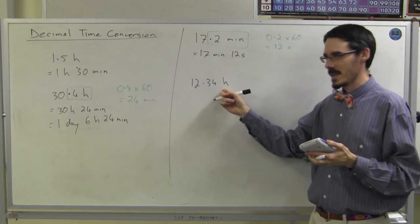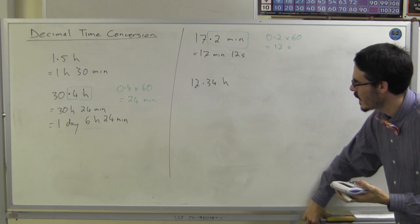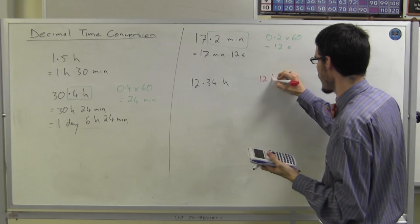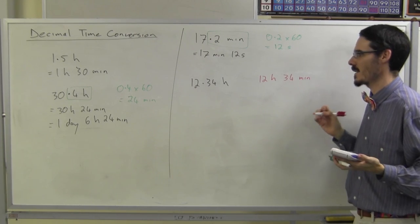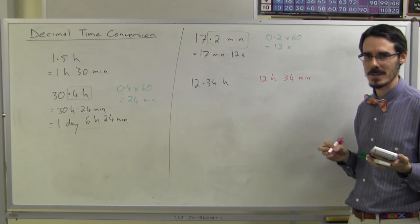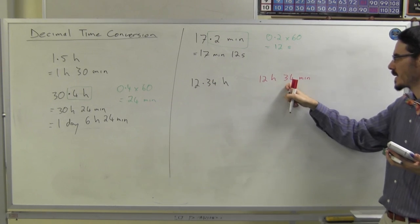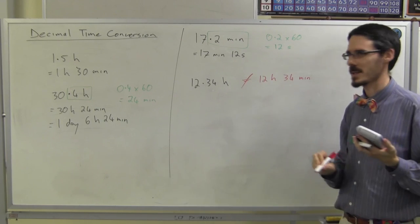This one is very tempting for my students to try to do this. They want to say that it's 12 hours and 34 minutes. They just can't resist doing that because it's 0.34. It must be 34 minutes. It isn't. This is 34 out of 100. This is 34 out of 60. They are not the same.